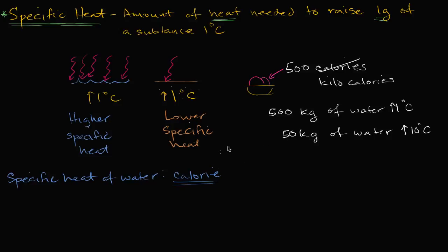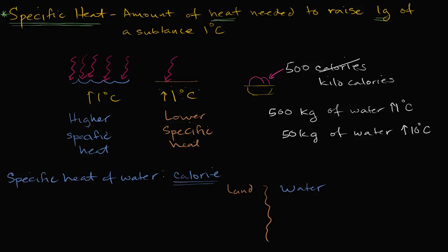Water's higher specific heat relative to land has huge impacts on our climate, and it's one reason why it's often nice to live near the coast. Imagine a coastline from above: this is land — let's say it's made up of sand — and this is water.